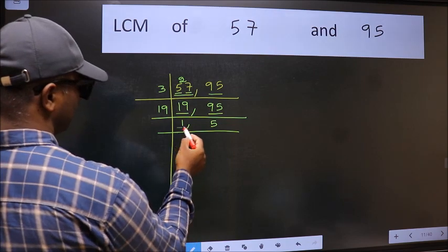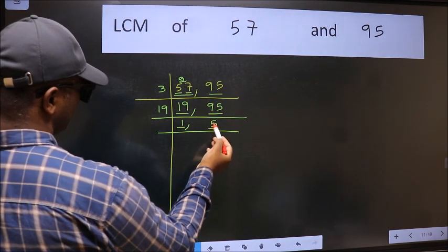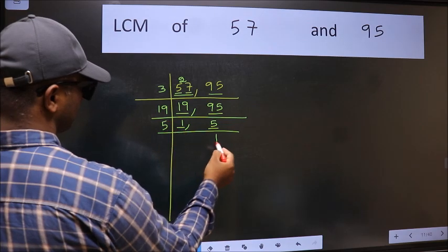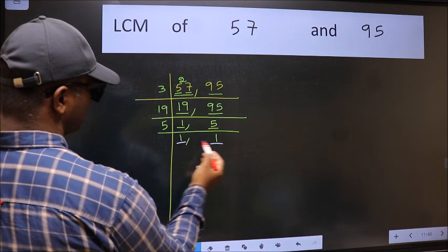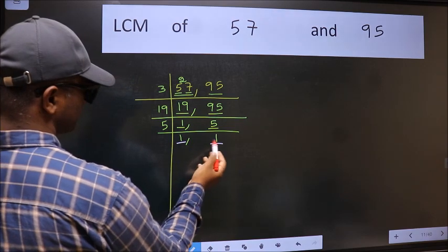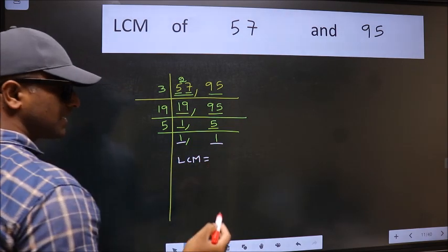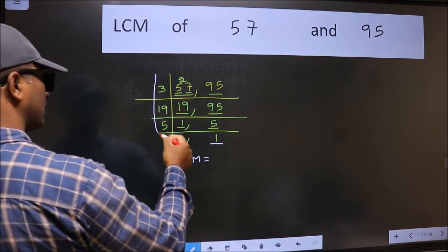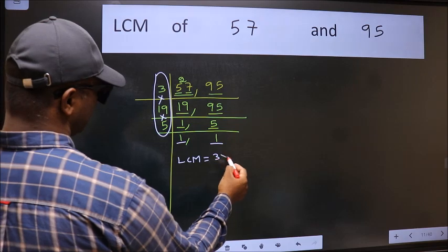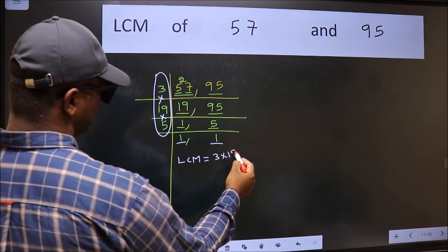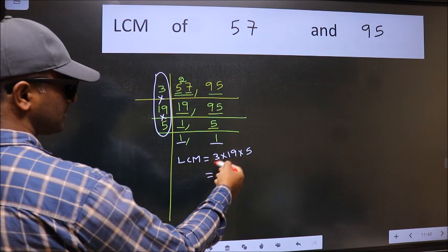Now we got 1 here, so focus on the next number 5. 5 is a prime number, so 5 once is 5. We got 1 in both places. So our LCM is the product of these numbers: 3 into 19 into 5. When we multiply these numbers, we get 285 as our LCM.